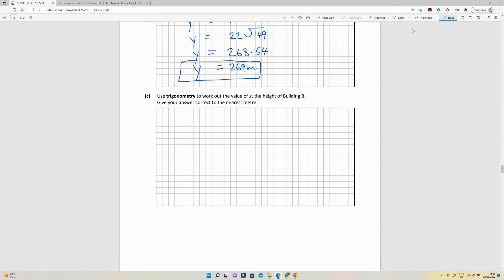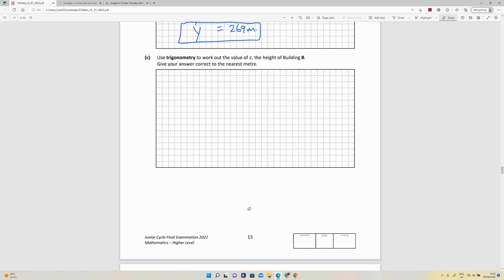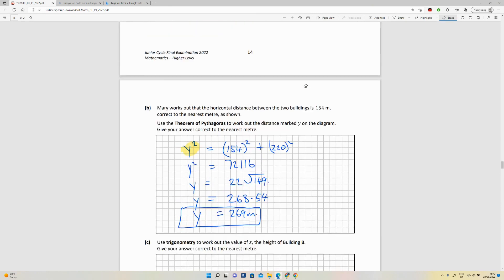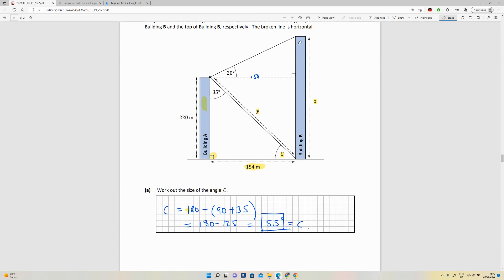Use trigonometry to work out the value. Last part, use trigonometry to work out the value of z, the height of the building. Let's go back to the diagram. So z is the height of building B.